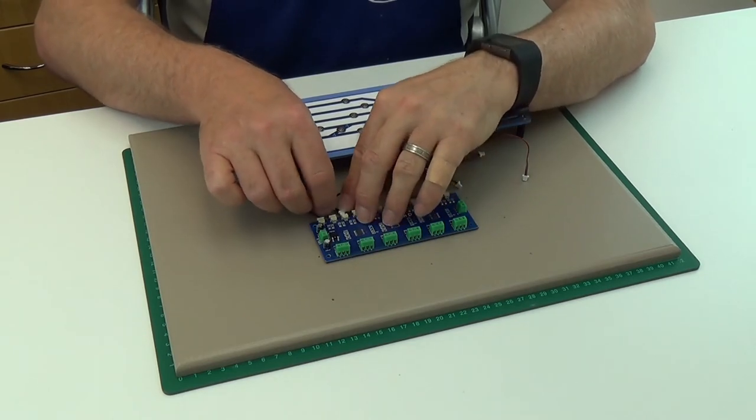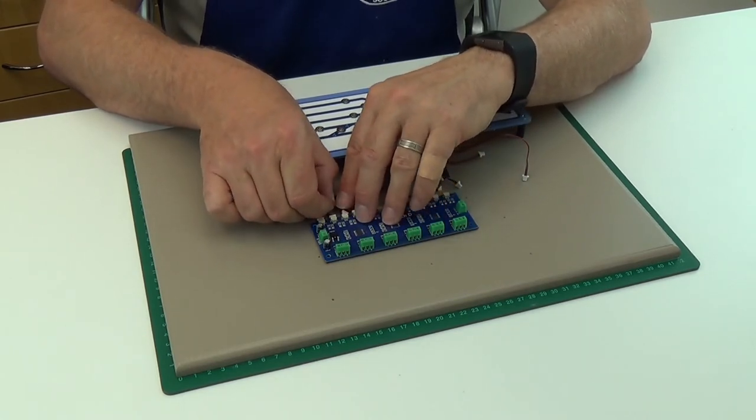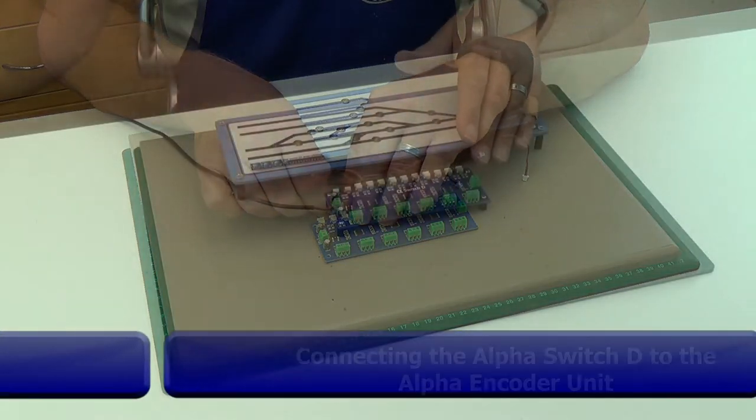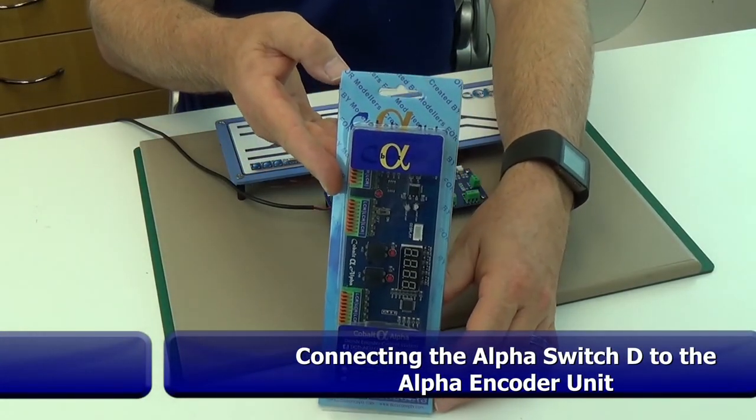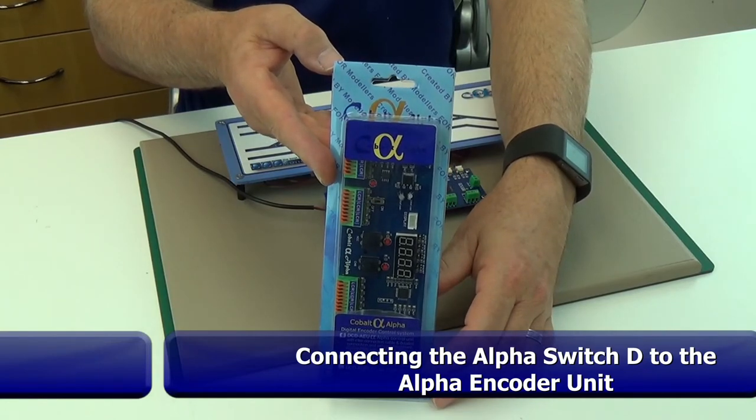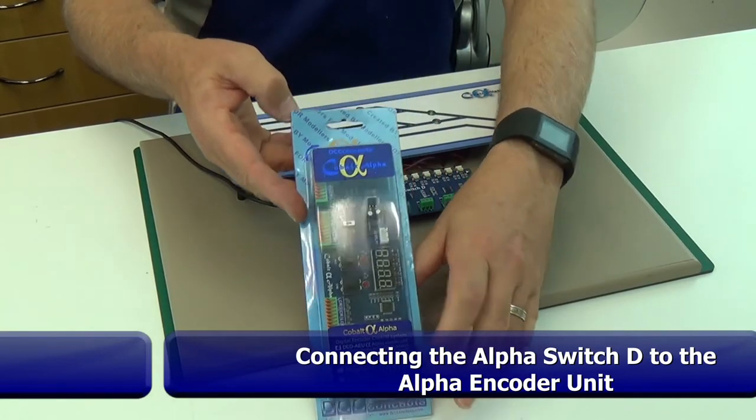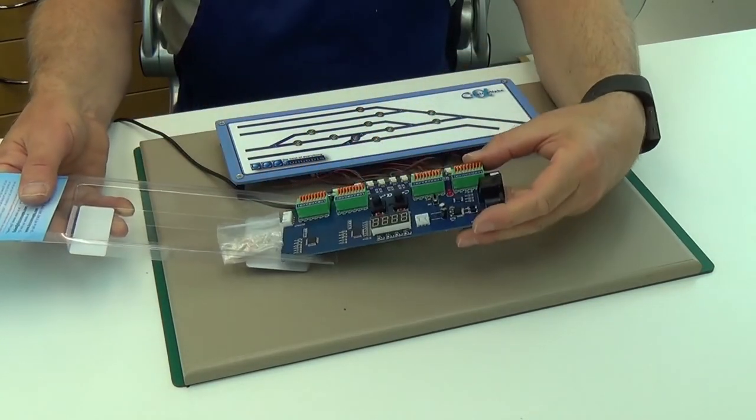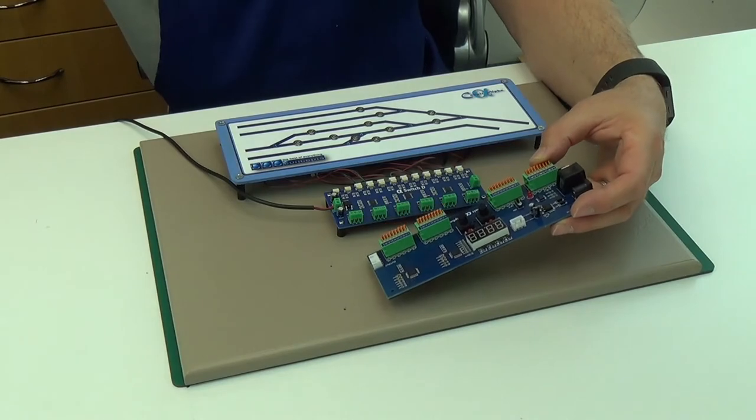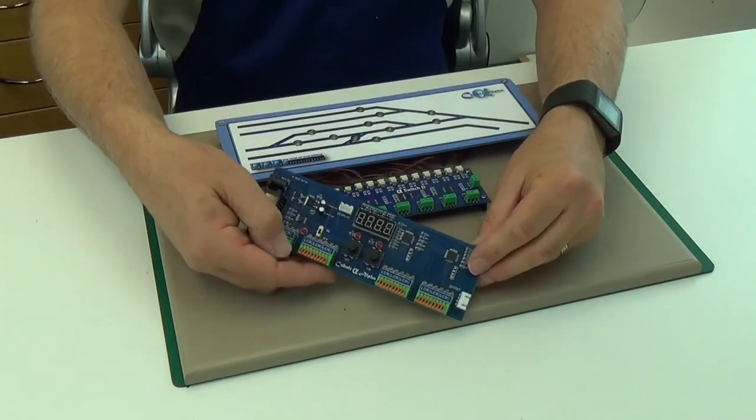Now the switches are wired to connect each pair of switches to corresponding inputs on the alpha encoder unit or AEU that will convert the switch action into a digital command signal.